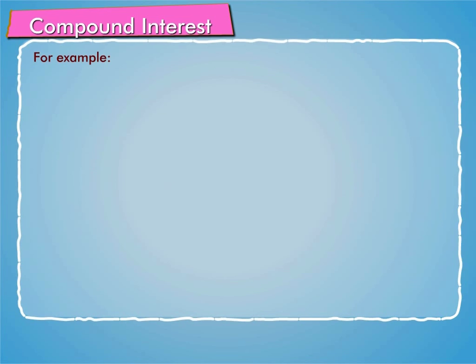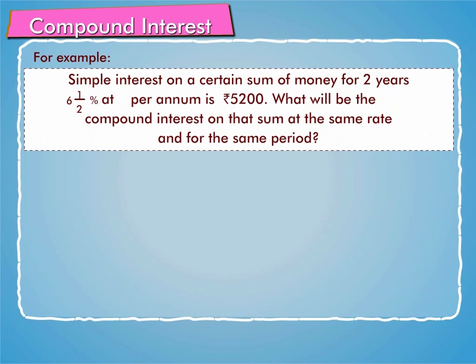Let us solve an example by using the compound interest formula. Suppose simple interest on a certain sum of money for two years at six and a half percent per annum is rupees 5200. Find the compound interest on that sum at the same rate and for the same period.